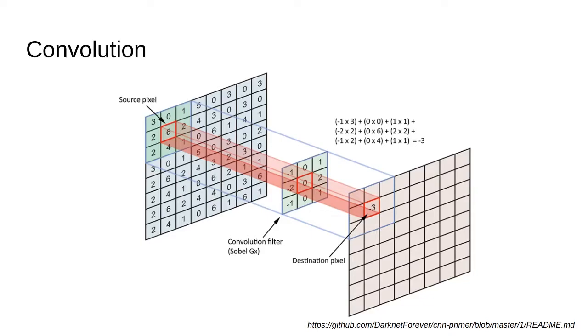The values in the filter are initialized with random values, and then the optimal values are learned along with the network parameters by backpropagation. Unlike digital image processing, where one designs the values of the filter on his own to perform a specific task such as blurring an image or extracting edges,